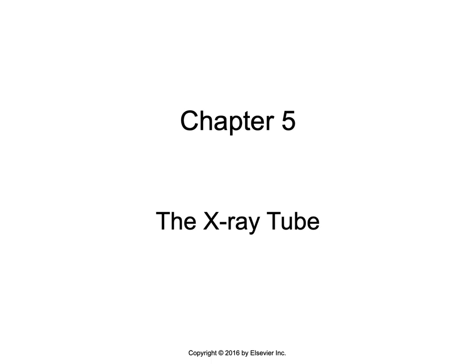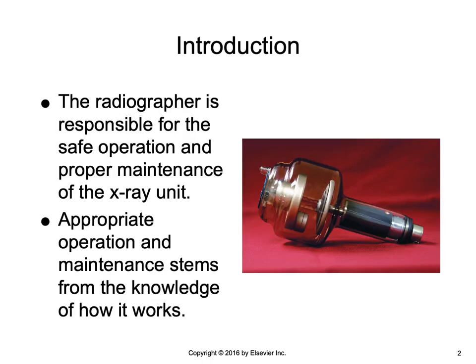Welcome to week five. This week we will be looking at chapter five, the x-ray tube. We'll be discussing each part of the x-ray tube, including how each selection made at the control panel is going to affect each corresponding part. The sole purpose for manipulating electricity in the x-ray circuit is to create the environment in the x-ray tube necessary for x-ray production, which we need to create a diagnostic image.